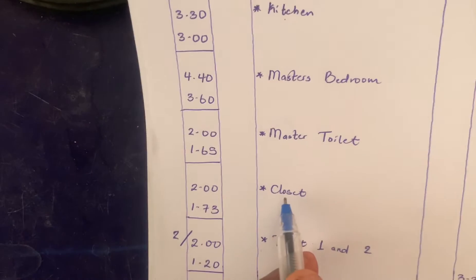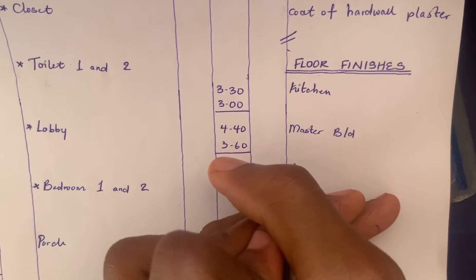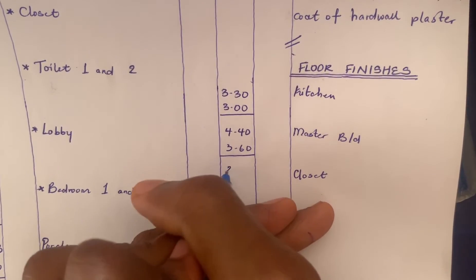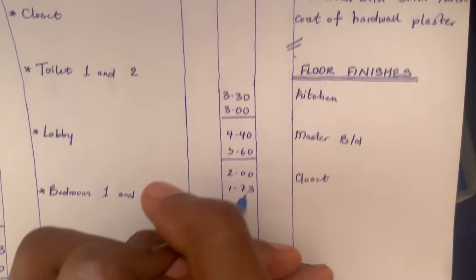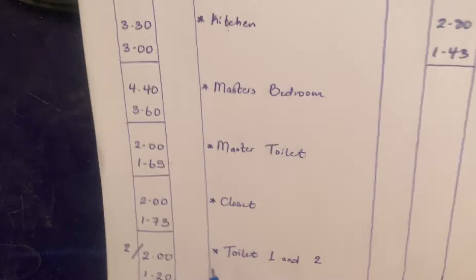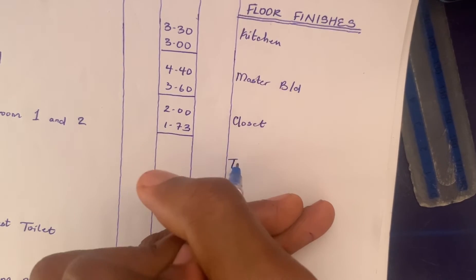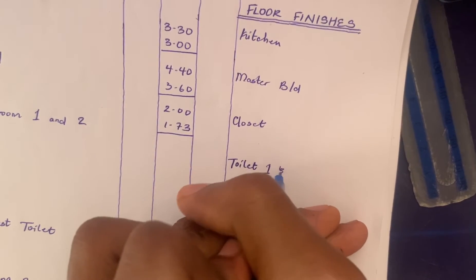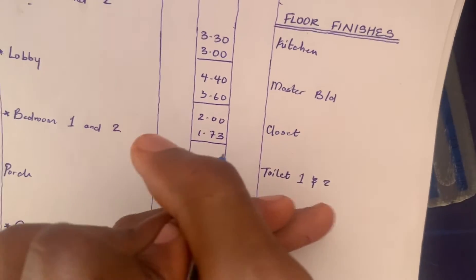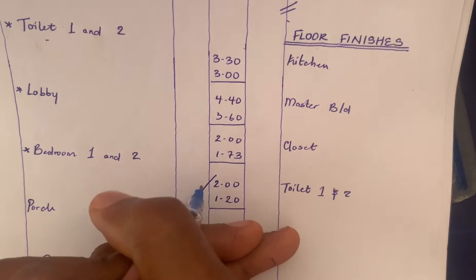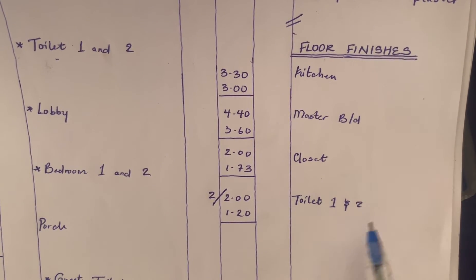The next would be the closet, which we calculated as 2.00 by 1.73, so we book that. Next would be toilet one and toilet two, which we measured as 2.00 by 1.20. We times it by two because it's the same dimension for both toilet one and two.